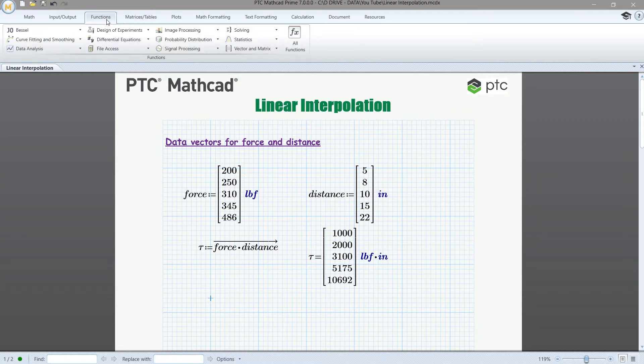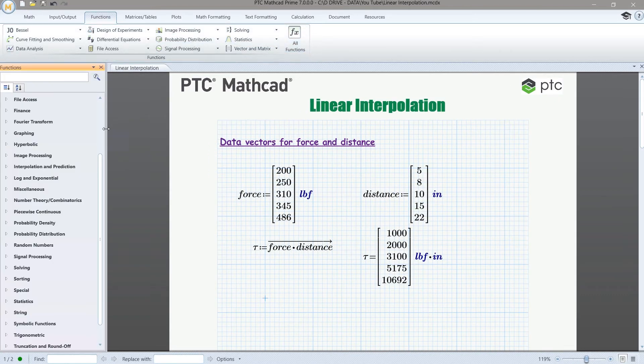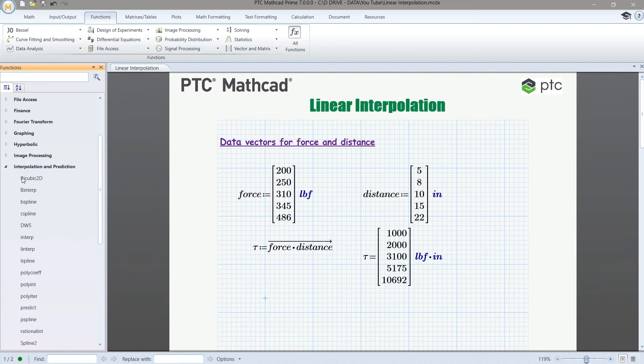In MathCAD, we have a built-in function that helps us do this. So we're going to go to the functions. I'm going to show you where the function is. So here on the all functions, here on the left-hand side, there is a category for interpolation and prediction. And so the function we're going to use is this one. It's L-I-N-T-E-R-P for linear interpolation.